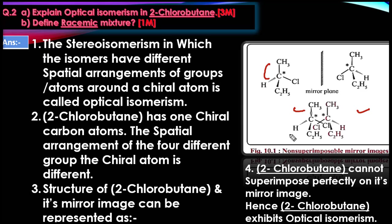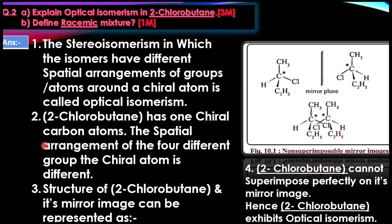2-chlorobutane cannot be superimposed perfectly on its mirror image — we have seen this from the structure. Both forms are non-superimposable mirror images, with hydrogen on opposite sides. To summarize: you must mention stereoisomers with different spatial arrangement, identify the chiral carbon atom with four different groups attached, and show the 2-chlorobutane structure as non-superimposable mirror images.